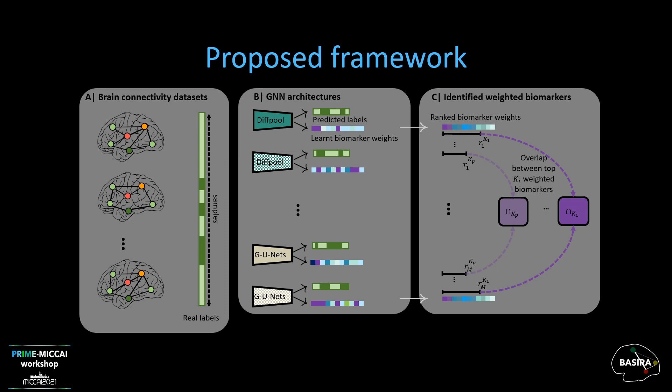After obtaining the sets of learned weights respected to the different models, we rank the ROIs based on their weights. Next, we extract the top-K ROIs using different thresholds and calculate the overlap between the top-ranked biomarkers obtained from the different models.